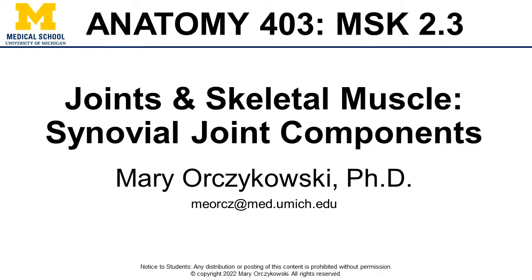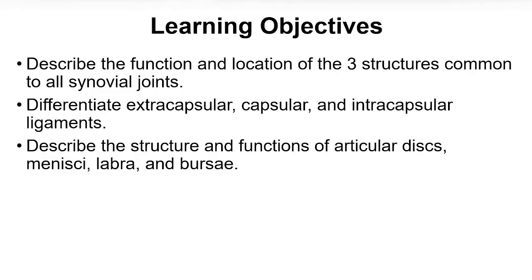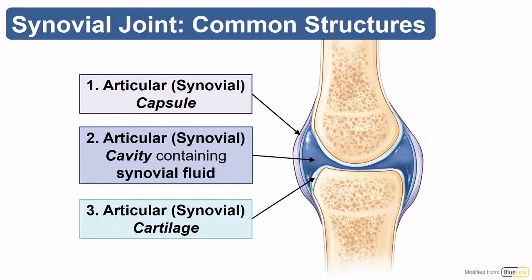Welcome back. Now we're going to really get in there and talk about synovial joints. By the end of this video, I'd like you to be able to describe the function and location of the three structures common to all synovial joints, differentiate types of ligaments, and describe the structure and function of supportive structures like articular discs, menisci, labra, and bursa.